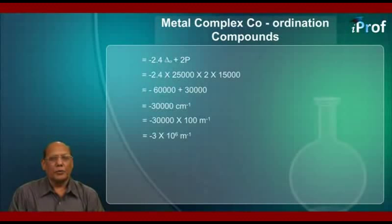This is equal to -2.4 times Δₒ plus 2P. Now, put down the values of Δₒ and P and calculate as shown here, then this net energy comes out to be equal to -3 × 10⁶ meter inverse.